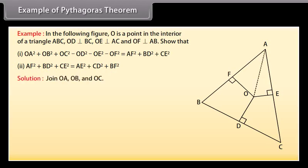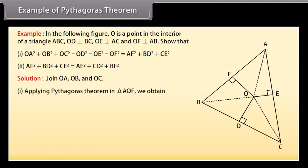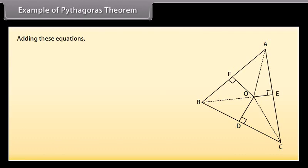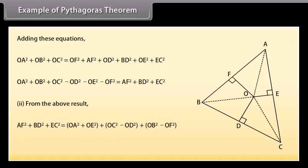Solution: Join OA, OB, and OC. 1. Applying Pythagoras theorem in triangle AOF, we obtain OA² = OF² + AF². Similarly, in triangle BOD, OB² = OD² + BD². Similarly, in triangle COE, OC² = OE² + EC². By adding these equations: 2. From the above result, AF² + BD² + EC² = OA² - OE² + OC² - OD² + OB² - OF². Therefore, AF² + BD² + CE² = AE² + CD² + BF².